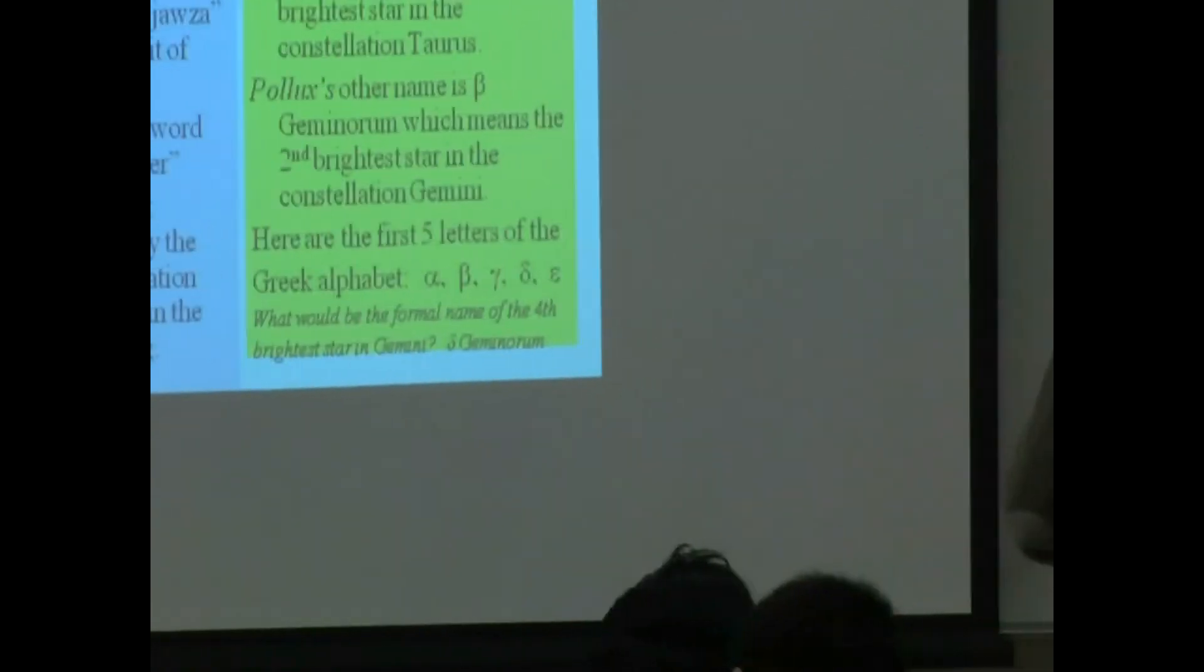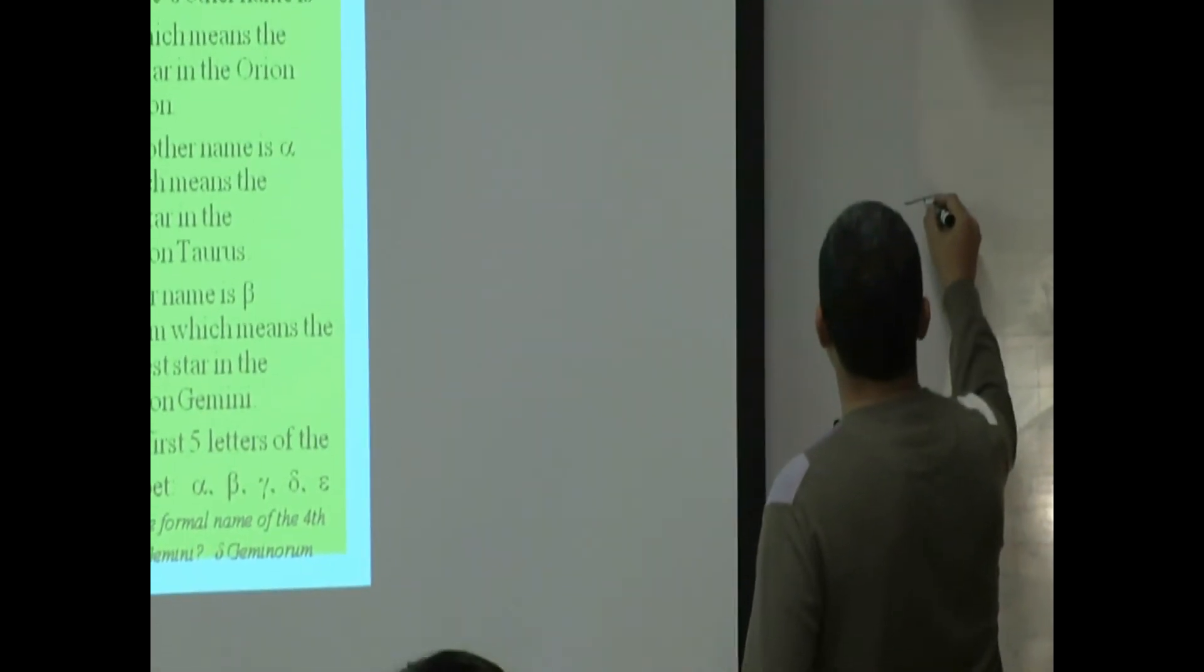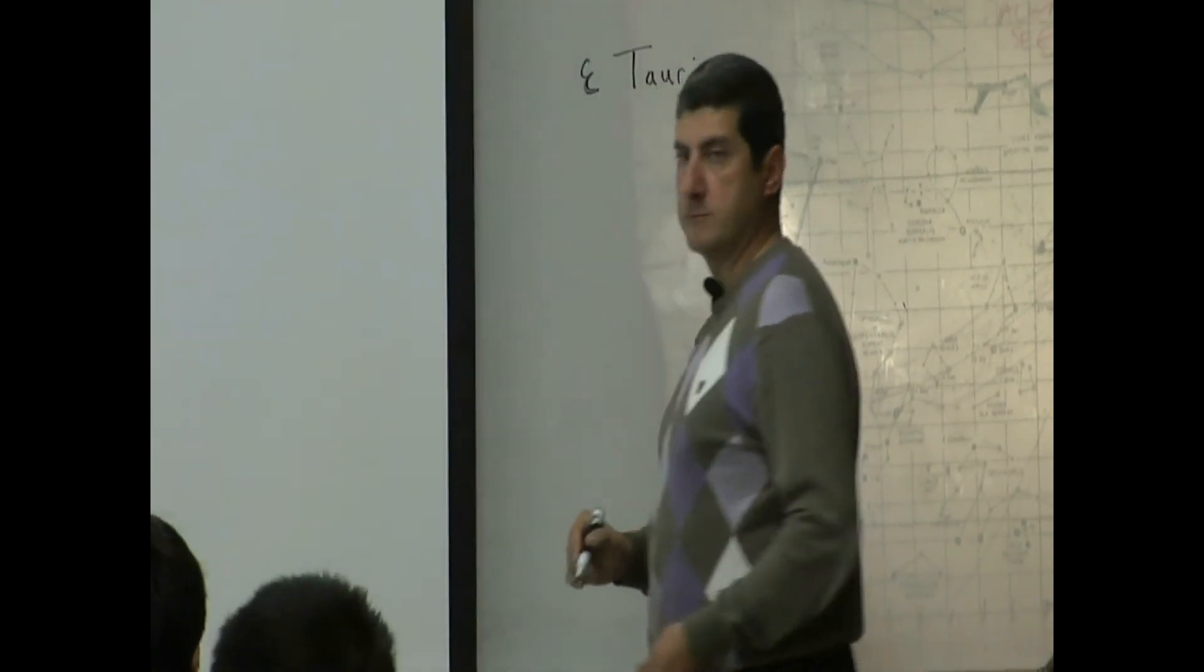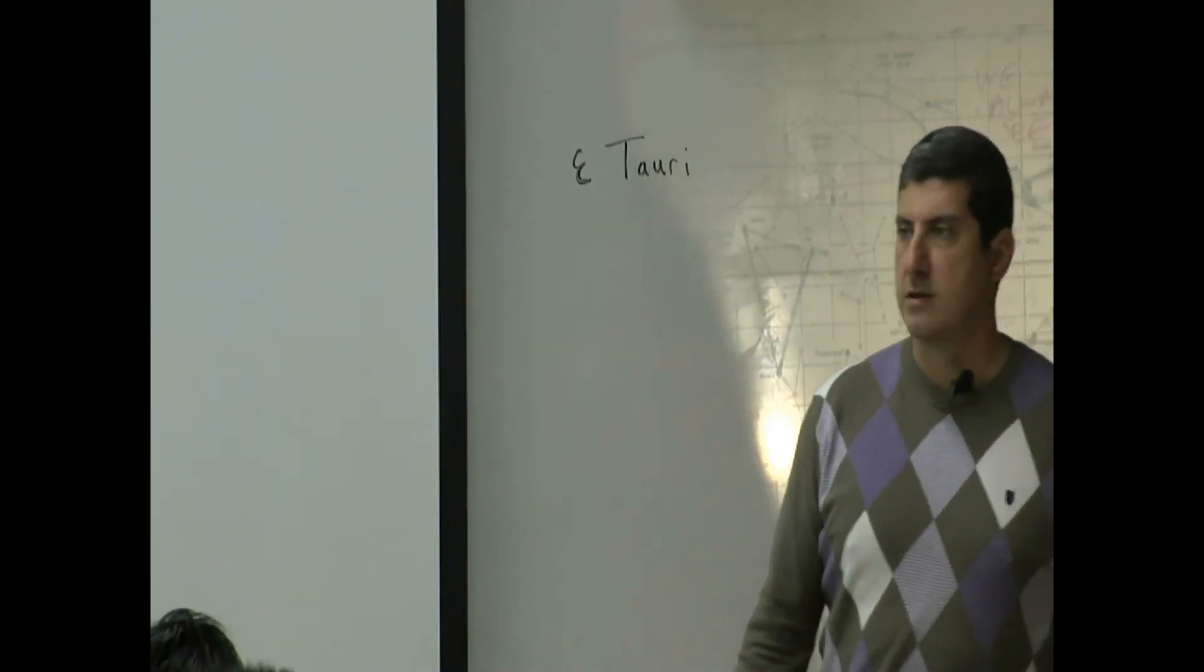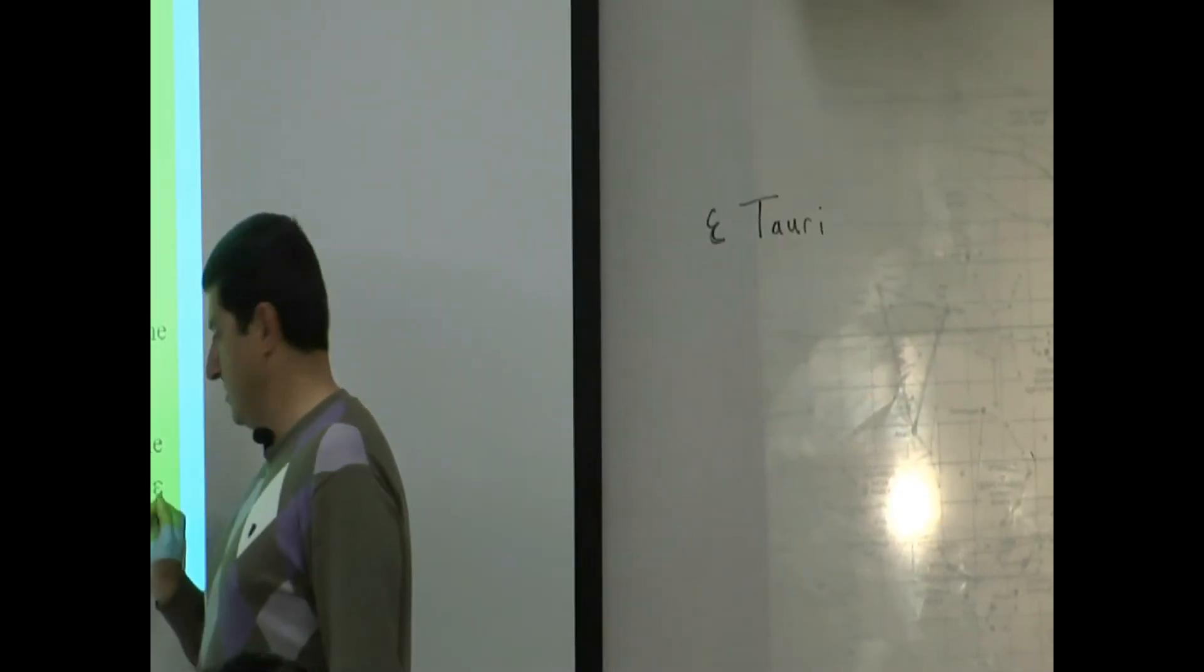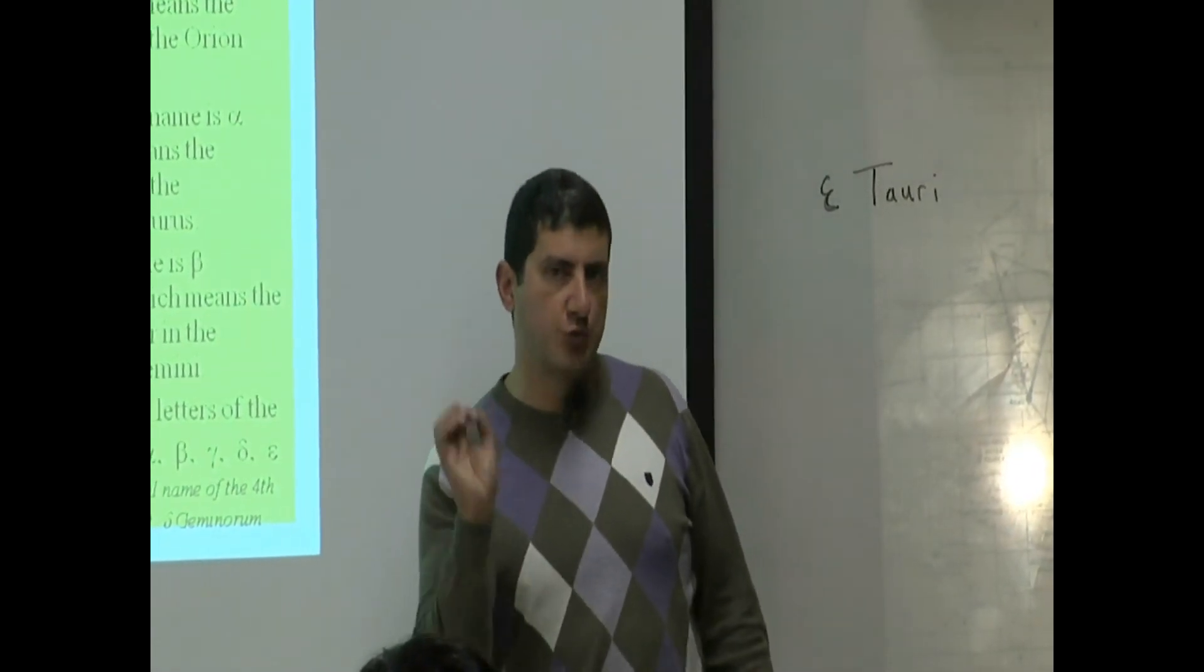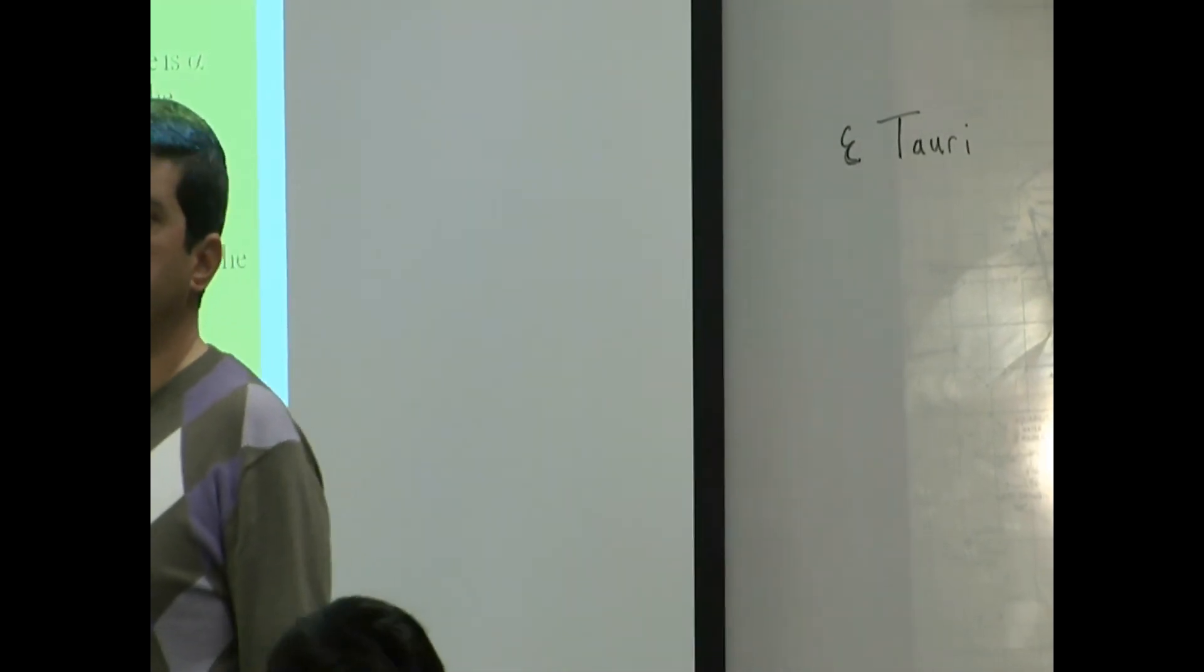And the answer is Epsilon Tauri. Don't put Epsilon Taurus—Tauri is the genitive case of Taurus. You have to use the genitive case.